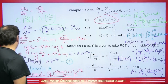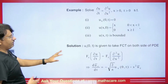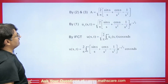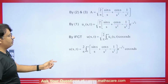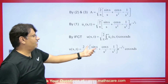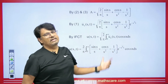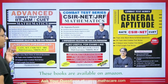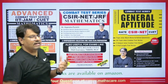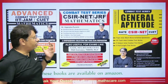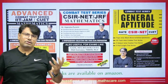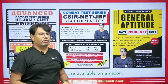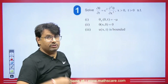This is the solution to the partial differential equation. The procedure is: apply the Fourier cosine transform, solve the resulting ODE, then take the inverse Fourier cosine transform. If you want to prepare for CSIR NET or IIT JAM exams, my books are available on Amazon and Flipkart. Now let's look at the next question.